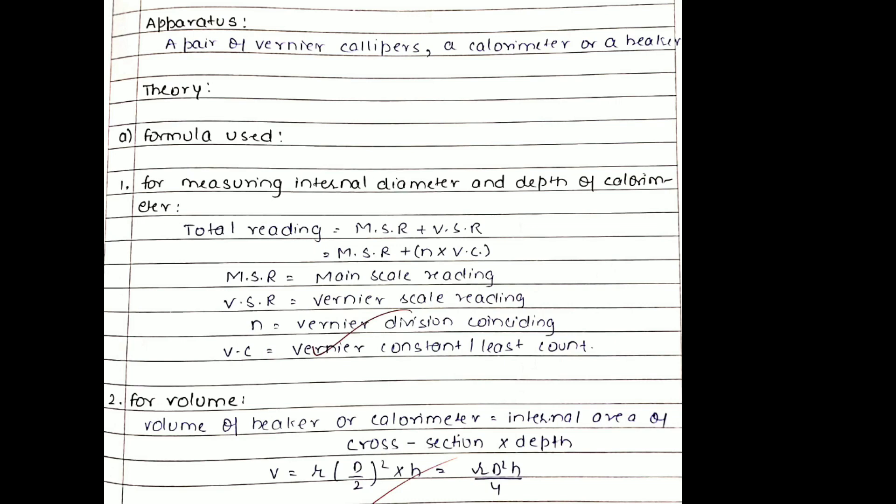Then we use another formula for volume. The formula is π r squared h. Here instead of using r squared, we use d squared by 4 because we find out the diameter not the radius. We are using the formula π d squared h upon 4 because a beaker is cylindrical in shape.